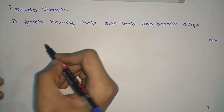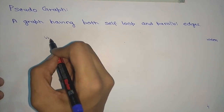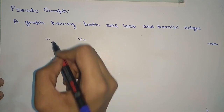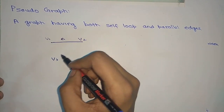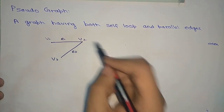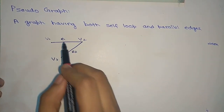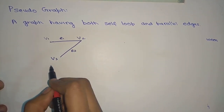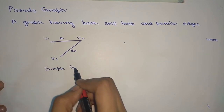For a simple graph example: suppose we are given three vertices V1, V2, and V3. There exists an edge E1 between V1 and V2, and an edge E2 between V2 and V3. Since there are no parallel edges and no self loop present in this graph, this is an example of a simple graph.